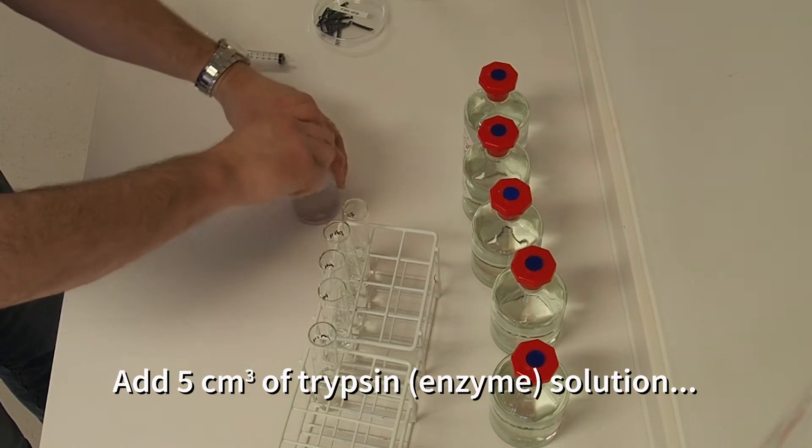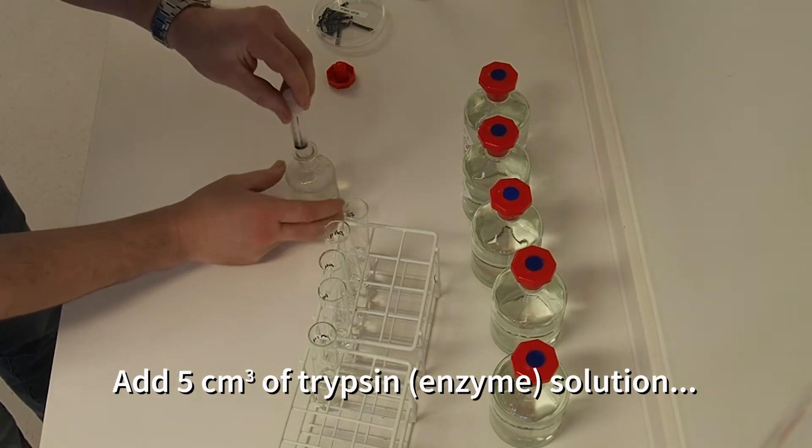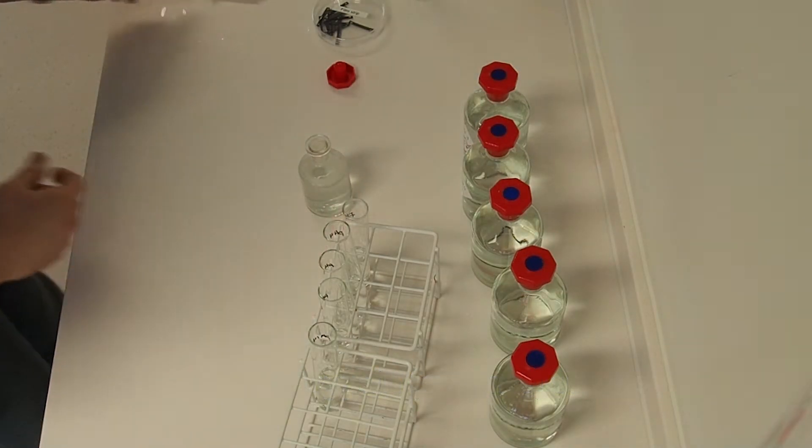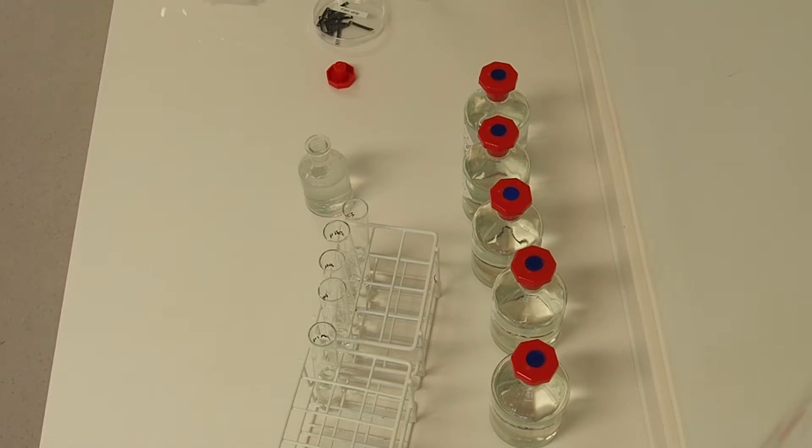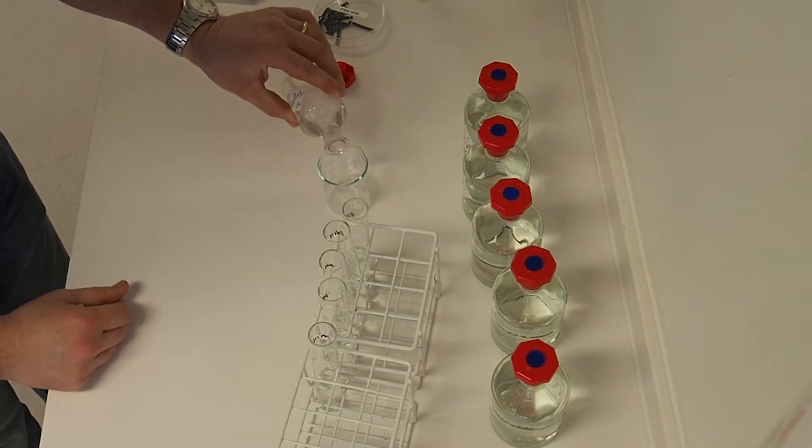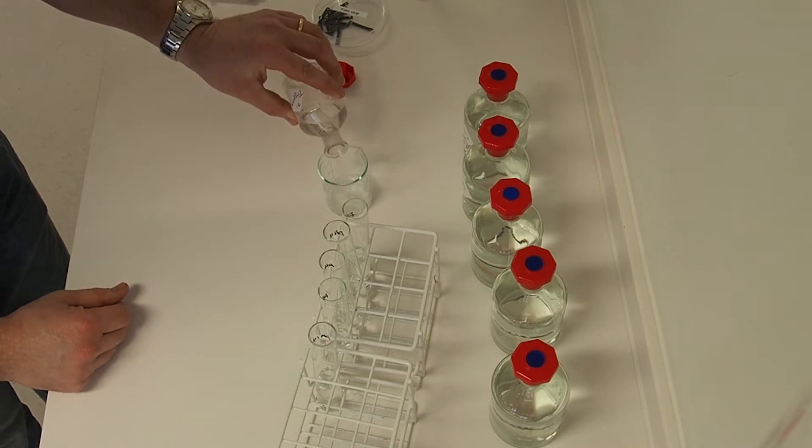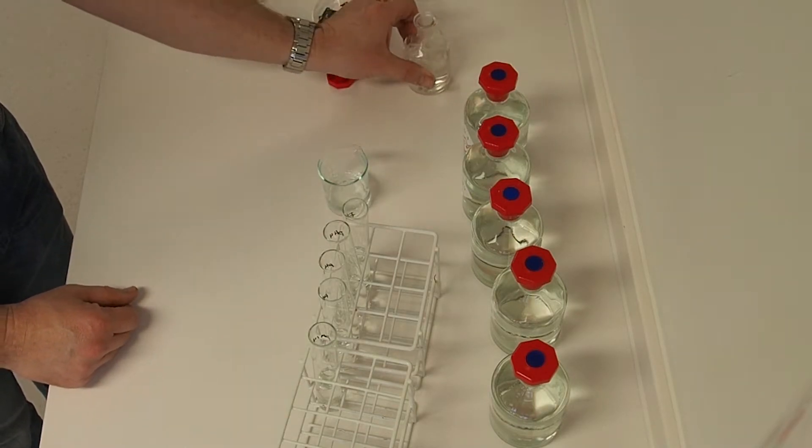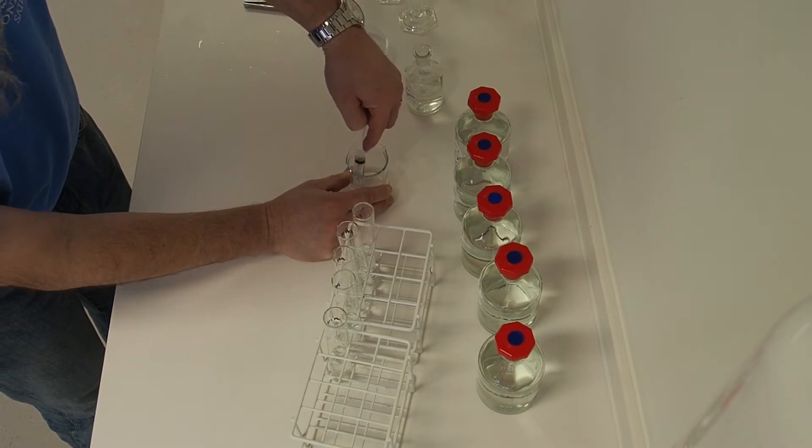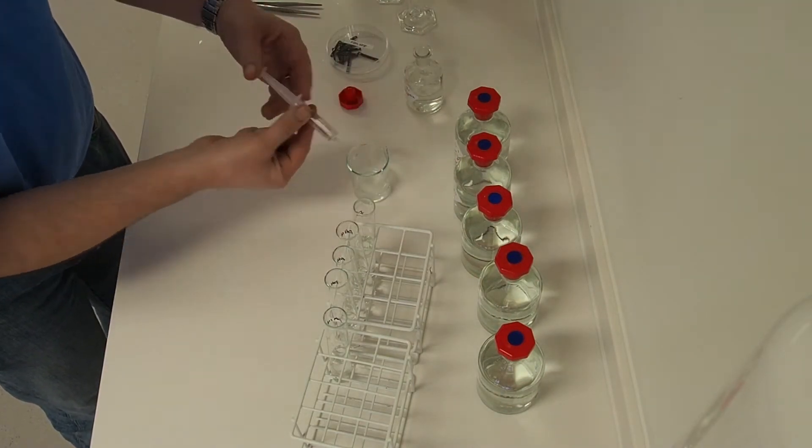Okay, so here is some 3% trypsin solution. I'm going to use 5 cm cubed of that into each tube. Trypsin is a protease enzyme, a protein digesting enzyme which is normally active in the duodenum, the first part of the small intestine, and which is produced by the pancreas. It'll break down proteins into individual amino acid molecules.